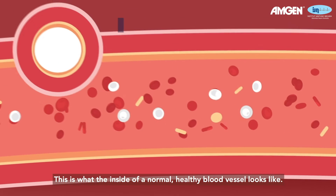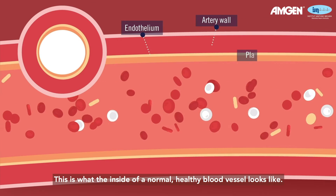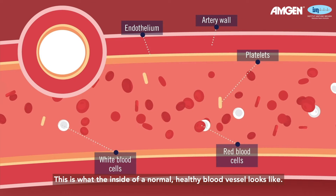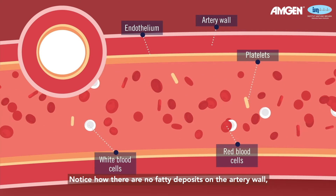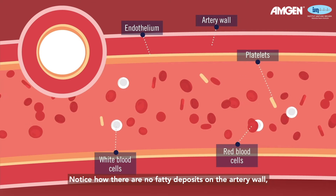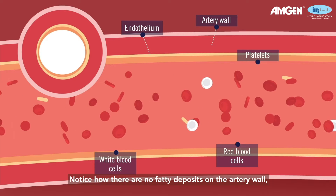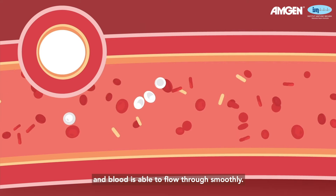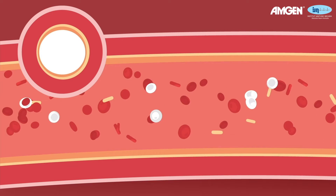This is what the inside of a normal healthy blood vessel looks like. Notice how there are no fatty deposits on the artery wall and blood is able to flow through smoothly.